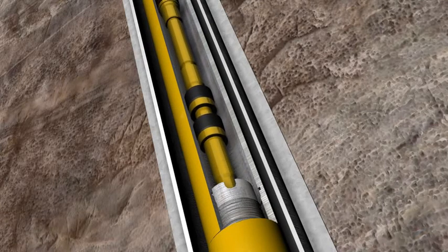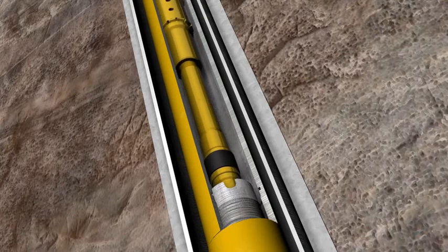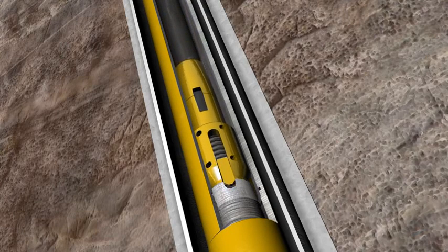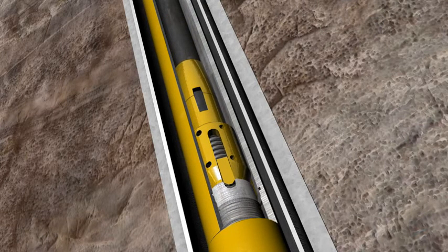At this point, the HR running tool assembly can be set back down into the liner packer, engaging the seals into the polished bore, and a casing test can be performed for packer casing integrity.